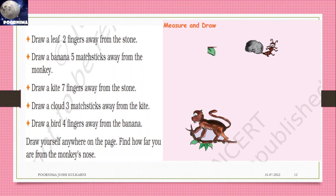Draw a cloud three matchsticks away from the kite. Draw a bird four fingers away from the banana. The activity: You have to do it yourself. Draw yourself anywhere on the page. Find how far you are from the monkey's nose.